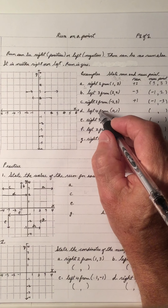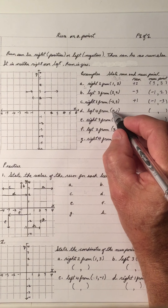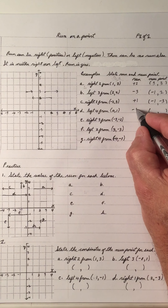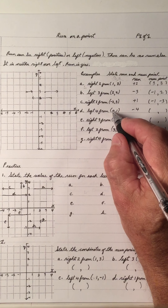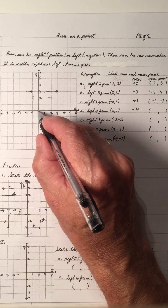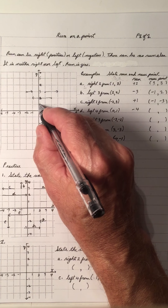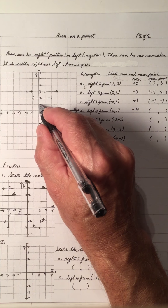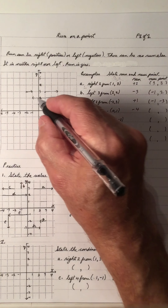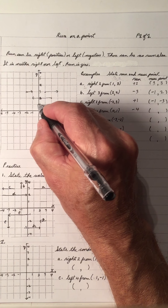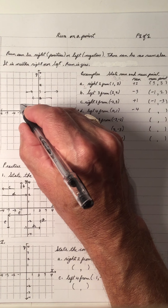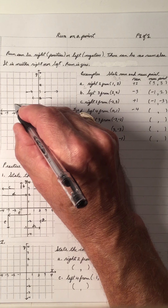Left four from the point (0, 1). Left four means minus four. So the point (0, 1): x is zero, y is one — there's the point. And we're going left four: one, two, three, four.